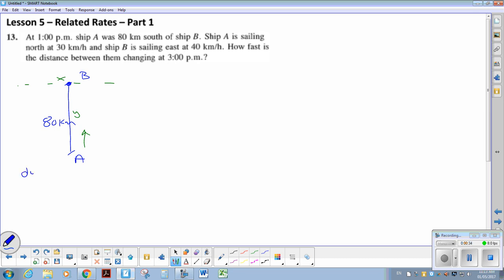So I know that dy by dt, because that distance is shrinking, A is getting closer to B, it's actually going to be a negative value, so negative 30 kilometers per hour, because it is shrinking or closing the distance. Ship B is sailing east, so Ship B is heading this way, so it's in the positive, it's stretching the distance from the starting point. So dx by dt is going to be positive 40 kilometers an hour.